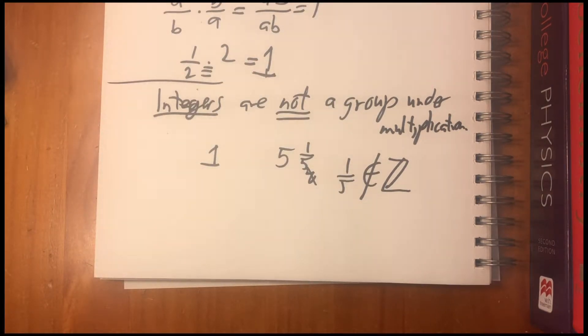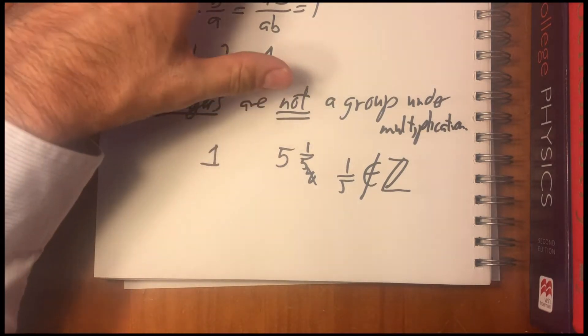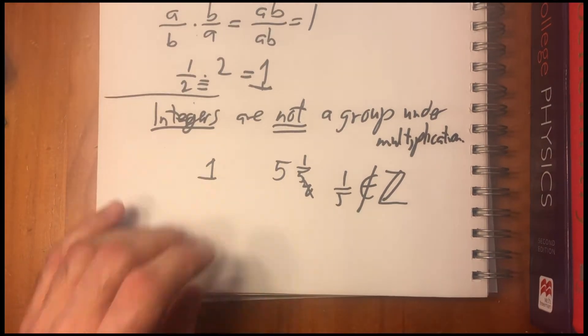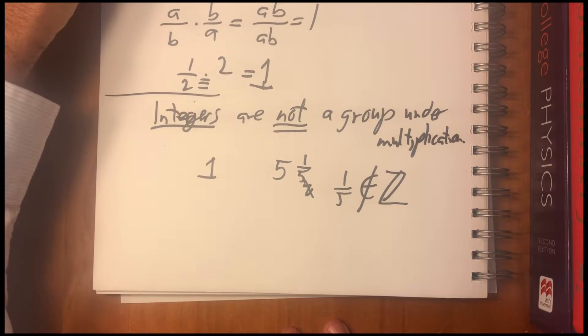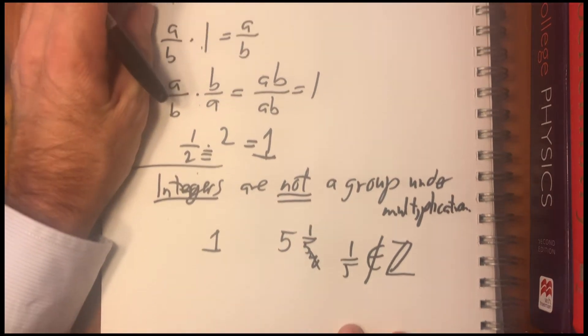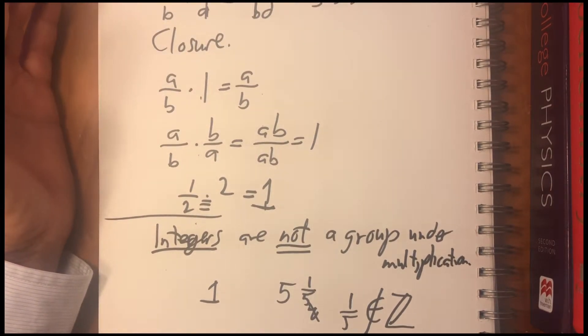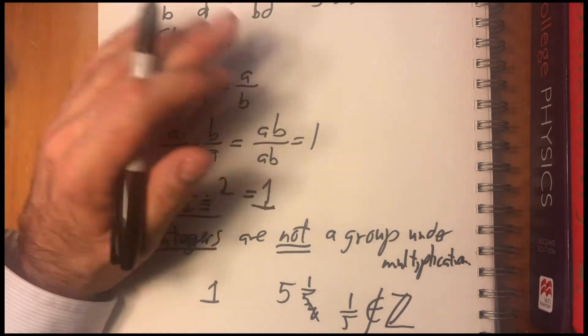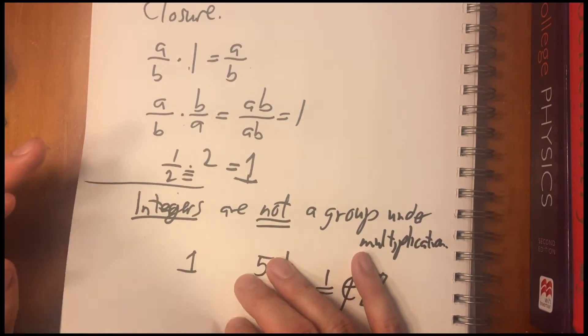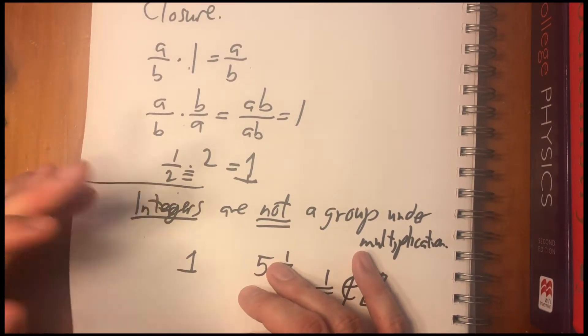So the groups that we've been talking about, of course, the rational numbers are also, the whole rational numbers are also a group under addition the same way that the integers are, so are the reals, and so on. But all of these groups have been commutative.